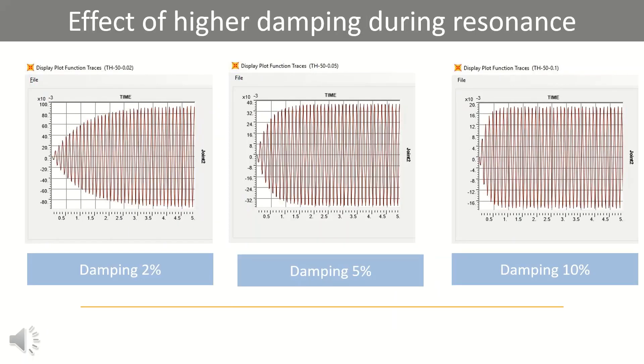Generally damping varies from 2% to 10% for different materials. As we have considered three values of damping for the earlier example, all other details are identical. We can observe that there is substantial reduction in amplitude with higher damping during resonance.